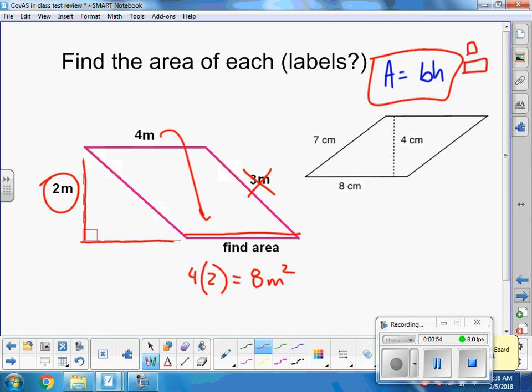The second one, why don't you press pause and try it out. Remember it's still base times height, so 8 times my height which is not 7, that's my side length. My height is 4. So 8 times 4 is 32 centimeters, and because we're talking area, it is squared.